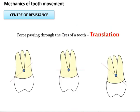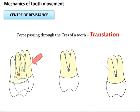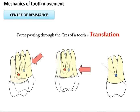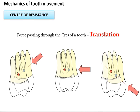Knowing where the center of resistance is located is important because if you want to know in which direction a tooth will translate, you must understand the location of its center of resistance. When force is applied at the center of resistance, the tooth translates in the direction of the applied force. If the direction of force is changed, the tooth translates accordingly.